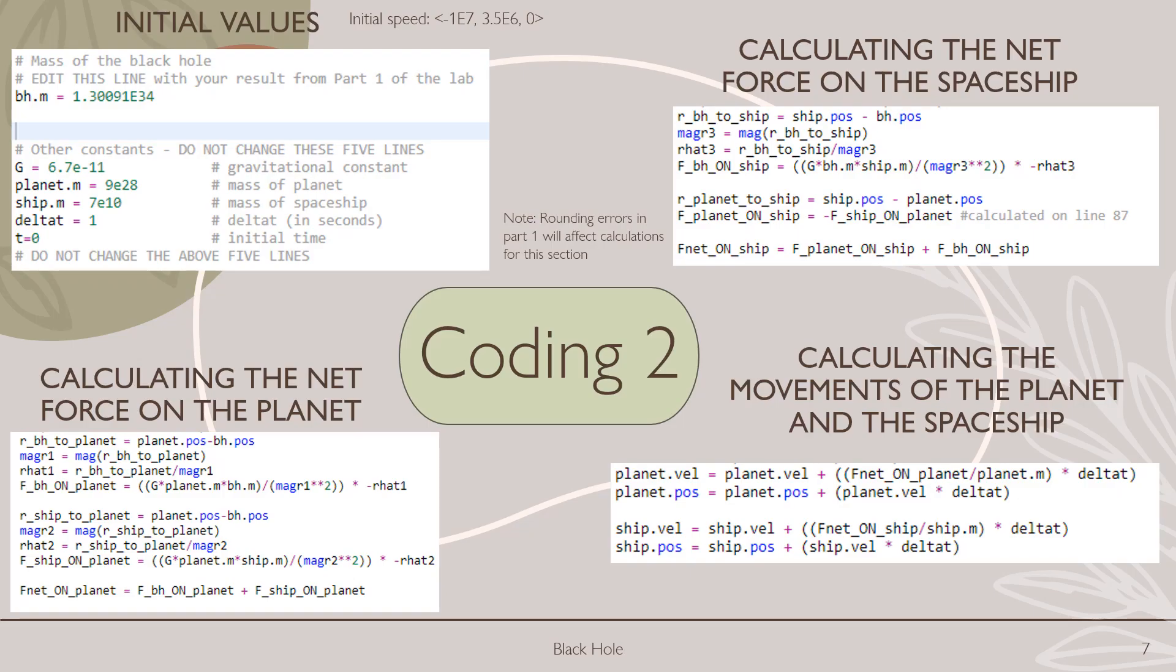Now we're going to move on to part two. Quick disclaimer, this will have a lot of coding. Now, so we'll start off with our initial values. Similar to last time, we're going to have the gravitational constant, but on top of that, we're going to have the planet's mass, the ship's mass, and we're going to have the black hole mass, which we calculated from part one. Note that this mass may be wrong because of the rounding errors from before, so that may have an effect on future calculations in this part.